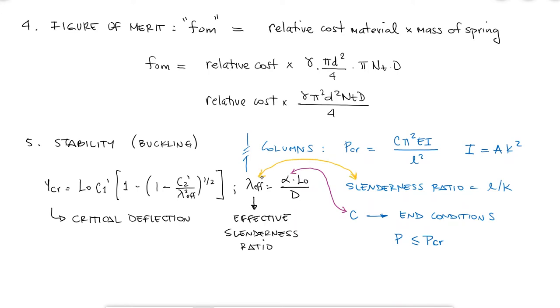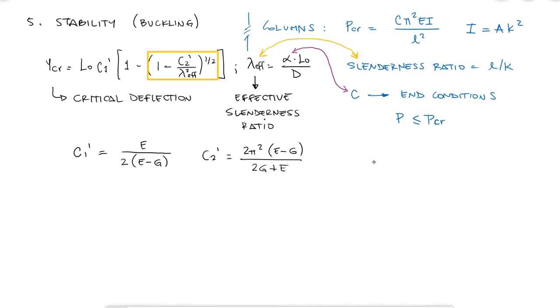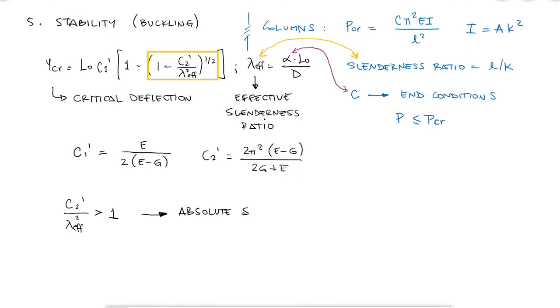C1' and C2' are dimensionless elastic constants that depend on the elastic and shear modulus E and G. Absolute stability can occur when the term C2' over the effective slenderness ratio squared is greater than 1, since we would have a square root of a negative number for our critical deflection expression.